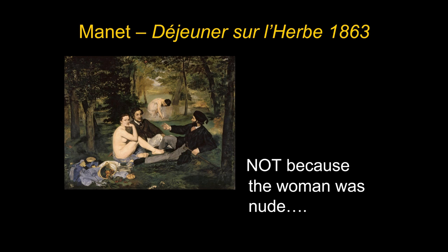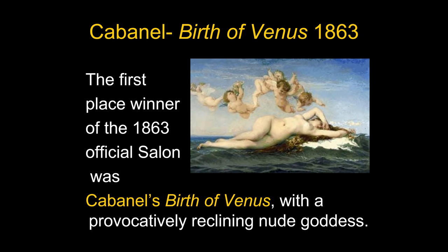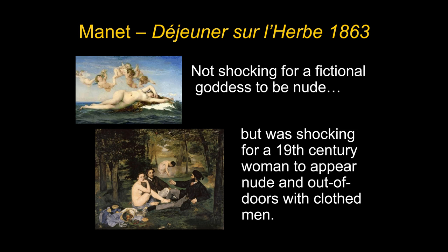Some of you will immediately say: there are nudes — a nude woman, and a woman in something like a wet, transparent chemise. It must have been the nudity. Well, not exactly. The first-place winner of the 1863 official Salon was Cabanel's Birth of Venus — definitely a nude woman in a very provocative pose — but she's been given the name Venus, so she's a classical goddess, and that makes it acceptable. The official Salon had many nude figures. After all, that was how you best showed anatomy and mythological subjects. A nude figure was not shocking if it was a fictional goddess.